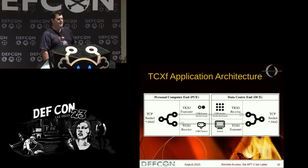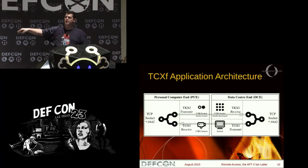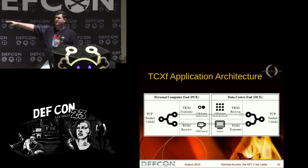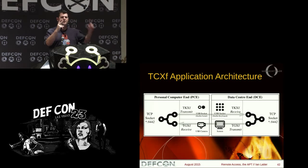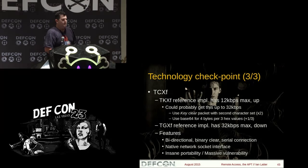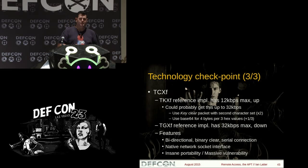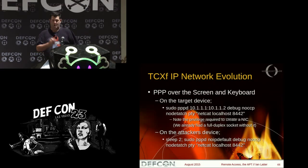Here's what we've got: on the attacker's computer on the left, a TCP socket is listening. Anything received through that TCP socket is sent out of a USB serial port to the keyboard stuffer, which types it in. Whatever is typed in is received on the organization side, decoded, and sent out of a TCP socket inside the organization. Whatever comes out of the organization is encoded and rendered to the screen, received by a camera, decoded, and output to the attacker's socket. This is a through-console, through-screen-and-keyboard, native TCP socket. The reference implementation gives 12 kilobits up on the keyboard side and 32K down on the screen side. We now have a bidirectional binary clear serial connection with a native socket interface with insane portability and massive vulnerability.